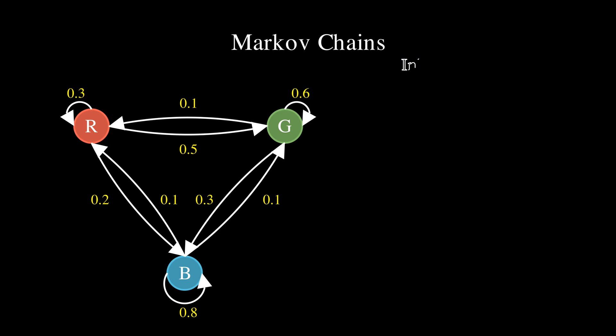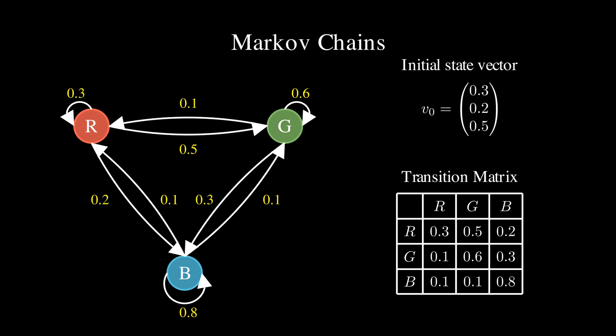We can further represent this system with an initial state vector which shows us the probability of starting in each state: 30% of being in the red state, 20% of being in the green state, and 50% in being in the blue state. And we can put all the transition probabilities between states in a matrix called, you guessed it, the transition matrix.